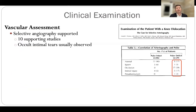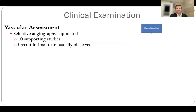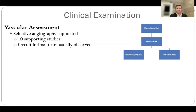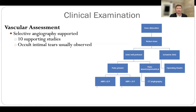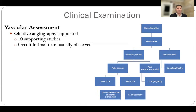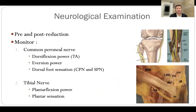We use a selective vascular assessment algorithm. If a patient has had a knee dislocation, we reduce the knee and assess perfusion. If the limb is ischemic, they go to the operating theater for urgent angiography. If the limb is well perfused, we assess pulses — any asymmetry prompts a CT angiogram. If pulses are symmetrical, we add an ankle-brachial index: below 0.9 gets a CT angiogram; above 0.9, ongoing clinical assessment over 24 hours is sufficient.